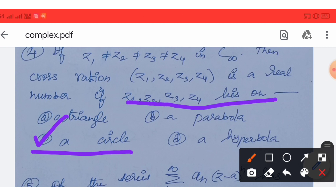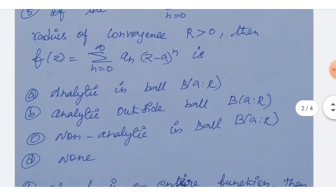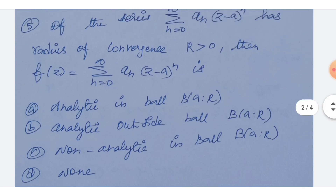Next question: if the series summation from n equals 0 to infinity of a_n times (z minus a) to the power n has radius of convergence R greater than 0, then f(z) equals that power series is: Option A: analytic in the ball B(a, R). Option B: analytic outside the ball B(a, R). Option C: non-analytic in the ball B(a, R). Option D: none of the above.